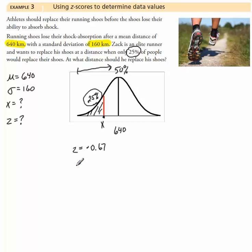Now we're going to fill this into our equation. Remember, our equation is z equals x minus mu divided by the standard deviation. Now we fill in the numbers that we know. We know our z-score. We don't know x. We know our mean, and we know the standard deviation is 160.